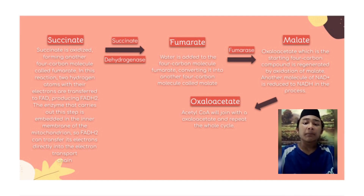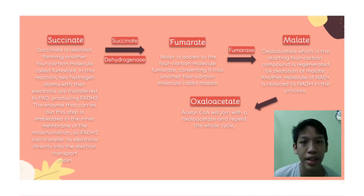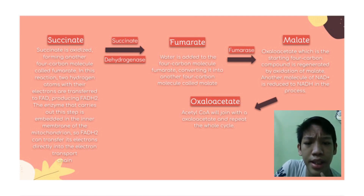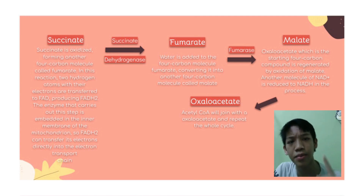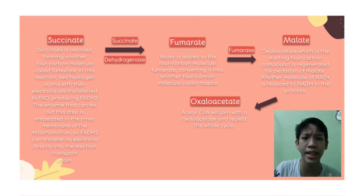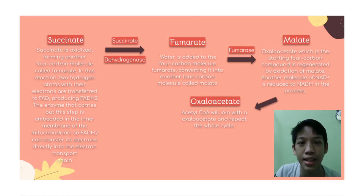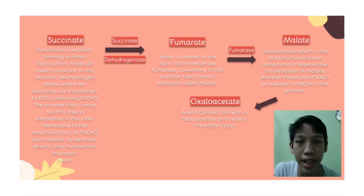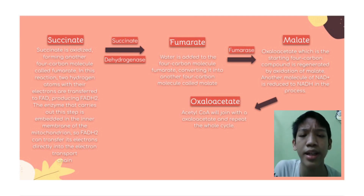In the seventh step, fumarate is converted to malate. In the eighth and final step, oxaloacetate — the starting four-carbon compound — is regenerated by the oxidation of malate. Another molecule of NAD+ is reduced to NADH in the process. This reaction is catalyzed by malate dehydrogenase.